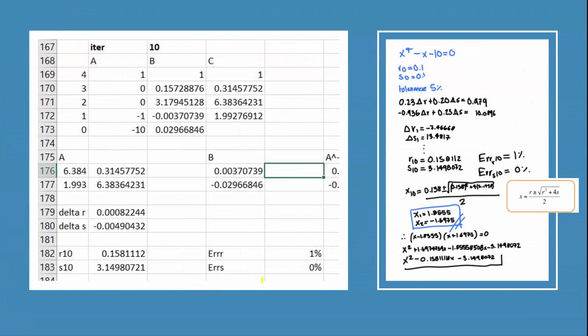But, here you can see that I have an error below the tolerance value, which was 5%. So, this might be a condensed version. I calculated the delta r and delta s until I got to r10. So, I iterated it 10 times. And, now, with these values, I will calculate the roots.